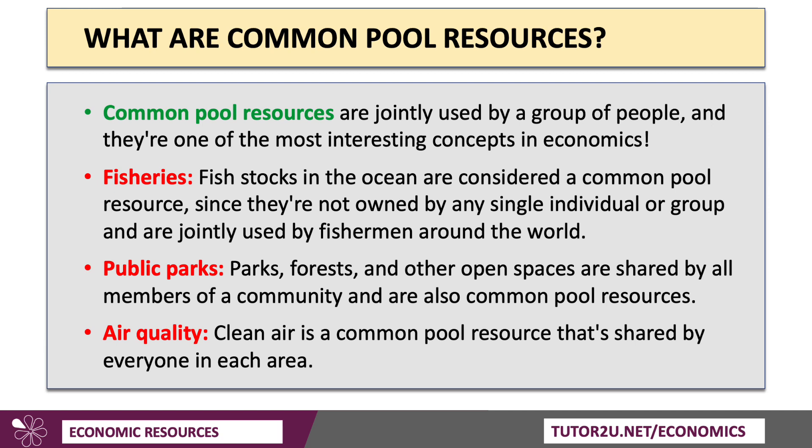Another key environmental concept is common pool resource. A common pool resource is jointly used by a group of people or a community — they are an extremely interesting concept in economics. Good examples include fish stocks, which are not owned by any single individual or group, and are jointly used by fishermen around the world. Public parks, forests, and other open spaces shared by a community are also examples. One can make a case for saying that clean air is also a common pool resource shared by everyone in the area.